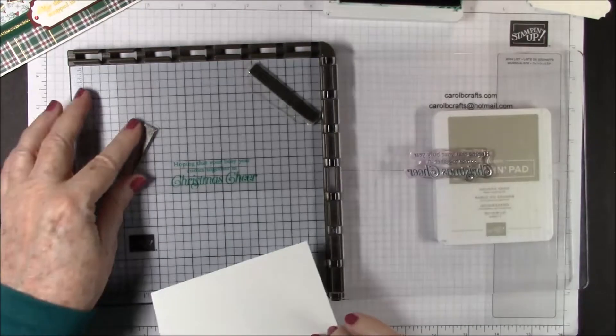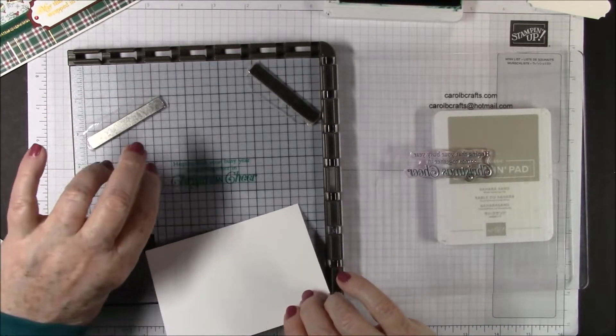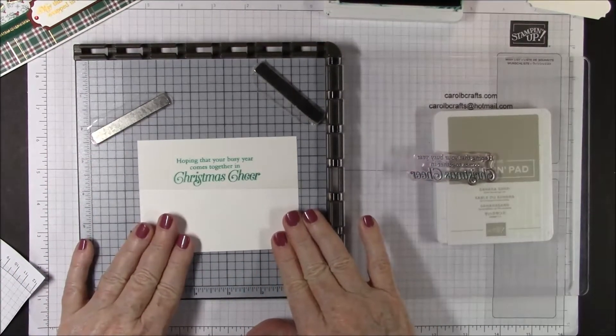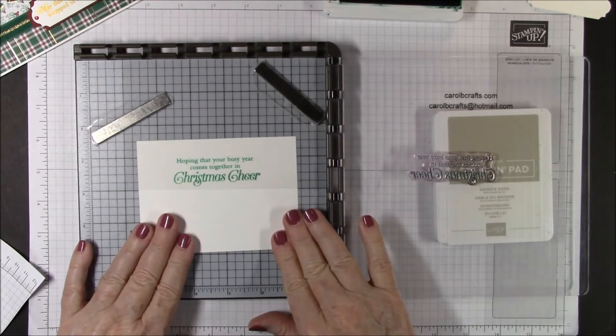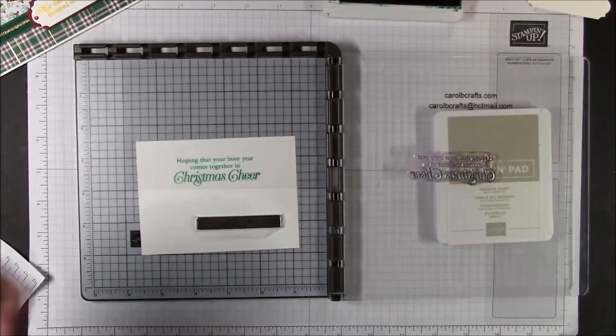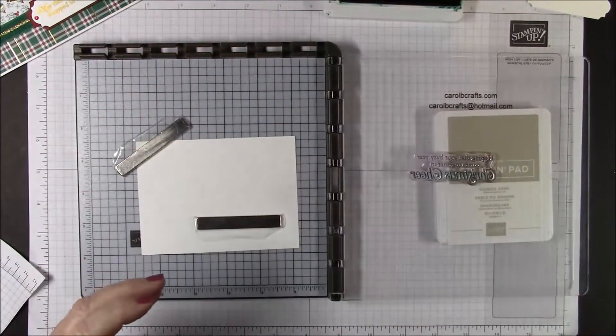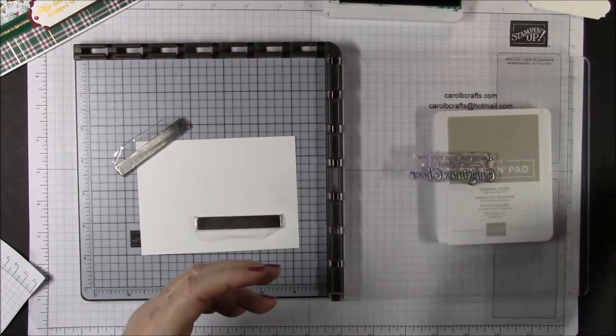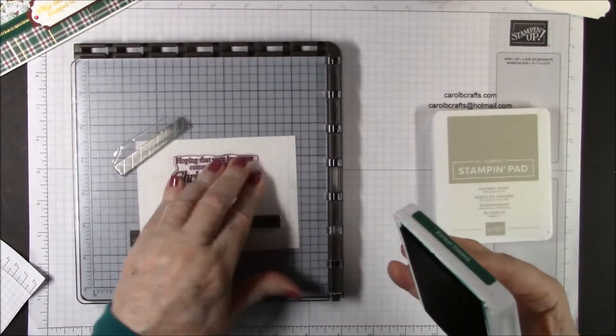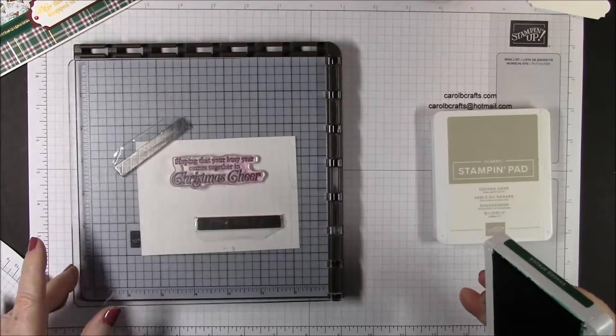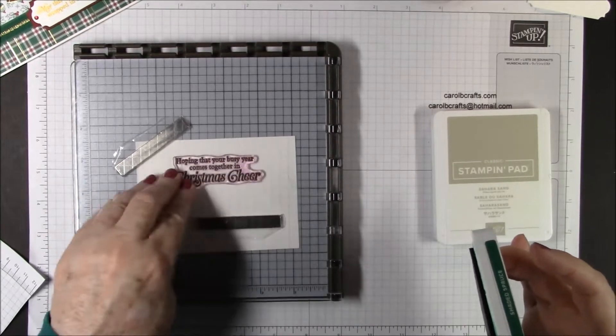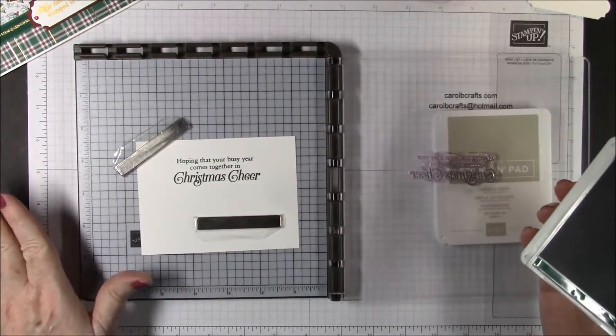I'm going to take my shaded spruce and stamp my Christmas cheer. This is landscape so we're going to stick this in landscape under our plastic, put it where you want it, I'm going to put mine right about there. Hold it in place with the magnet and ink up your stamp with your shaded spruce, and we are done with our stamping.